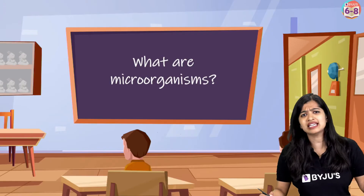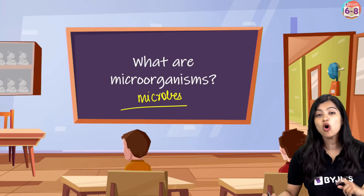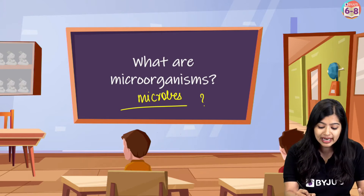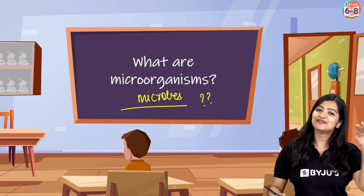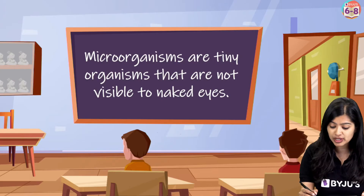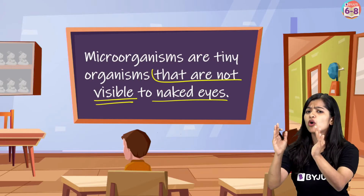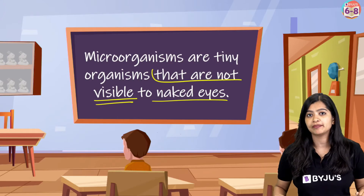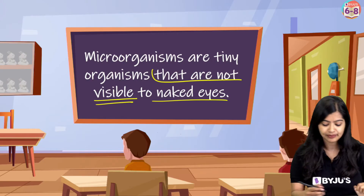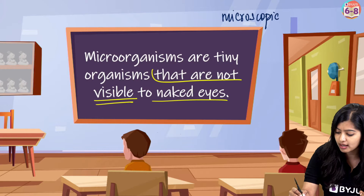So what are these microorganisms? Another way that we refer to them is as microbes. Microorganisms and microbes are more or less the same thing. Microorganisms are tiny organisms that are not visible to the naked eye — which means that at one go if you have a look, you will not be able to spot them. Rather, you need to zoom, magnify, and look closely, which is why we also call them microscopic organisms.